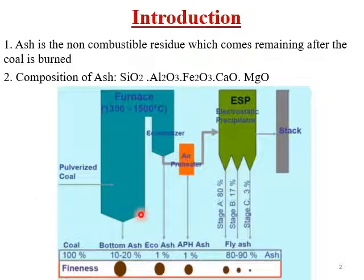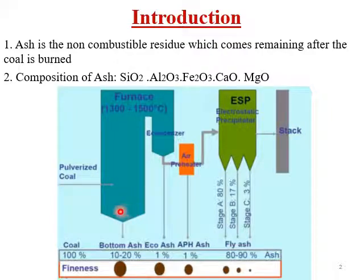When we burn coal, we get three elements: a large amount of heat energy, pressure on the water, and ash. The next element is fly ash. The third element is bottom ash, which settles at the bottom of the furnace.